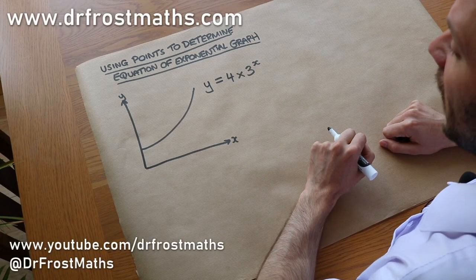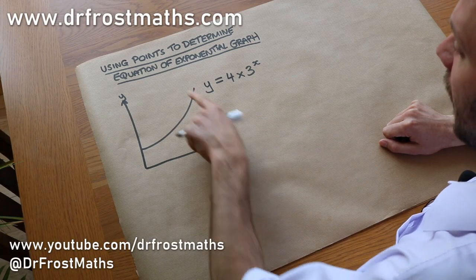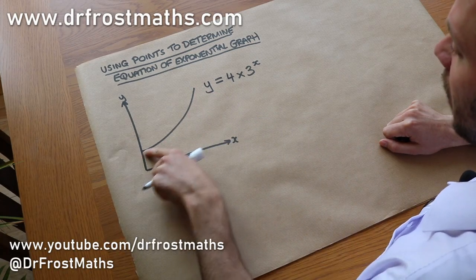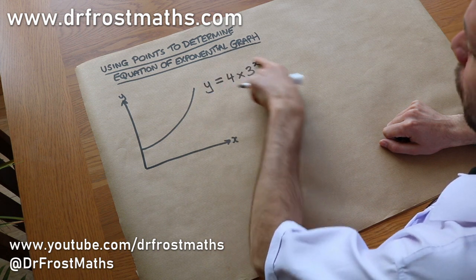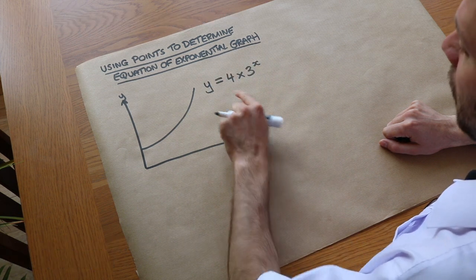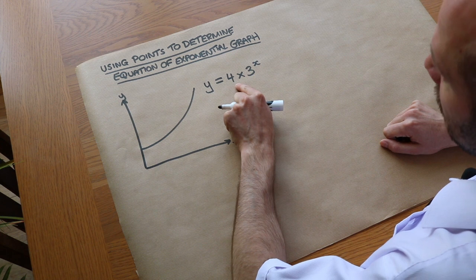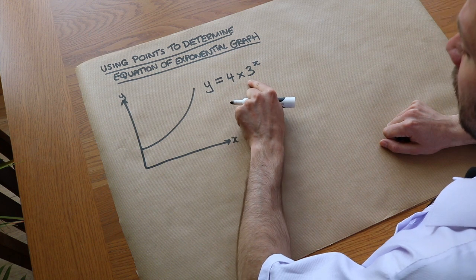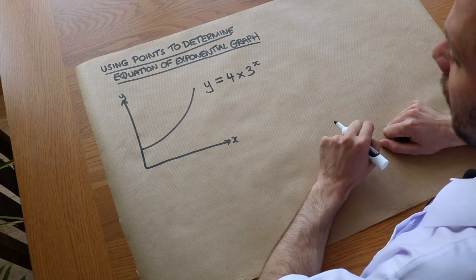In a previous video we looked at exponential graphs, which have a particular shape. An example equation of an exponential graph is always in the form y equals some number times some number to the power of x.